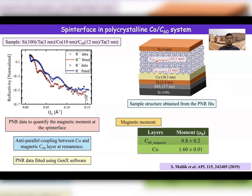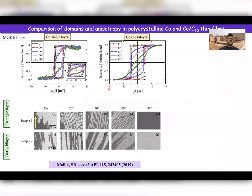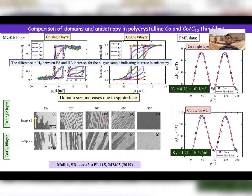Now let's go to another system with cobalt. We deposited cobalt on a silicon substrate, so cobalt is again polycrystalline. Unfortunately here we see less magnetic moment, about 1 μB in the C60. We also looked at the magnetization reversal processes. The domains here get bigger compared to the iron cases where they were smaller. Looking at the anisotropy, here it is slightly getting enhanced — whereas for the polycrystalline iron case the anisotropy was getting less. So these are the results from the in-plane magnetized thin films. We are also working on cobalt-iron-boron and other systems.